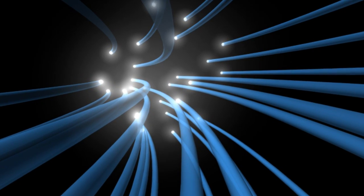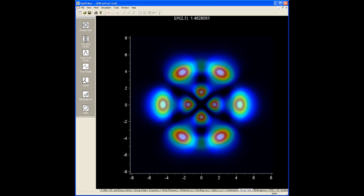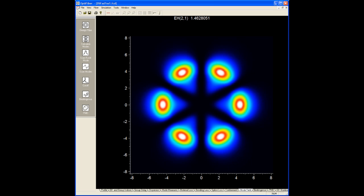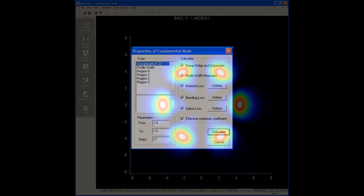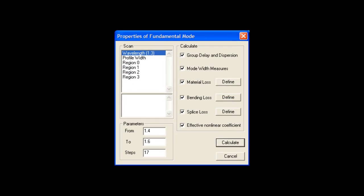OptiFiber is a collection of mode solvers and analysis tools specialized for optical fibers. OptiFiber can find LP modes and full vector modes for multi-layer and graded optical fibers. It has an easy-to-use scanning utility enabling the optimization of fiber designs.